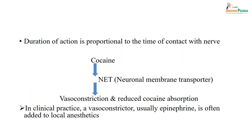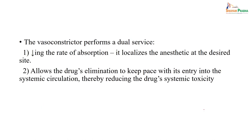Duration of action is almost proportional to the time of contact with a nerve. For example, cocaine interferes with neural membrane transporters, causes vasoconstriction, and reduces its own absorption. In clinical practice, a vasoconstrictor — usually epinephrine — is often added to local anesthetic. The vasoconstrictor decreases the rate of absorption from the site of action and allows the drug elimination to keep pace with entry into the systemic circulation, thereby preventing systemic side effects.